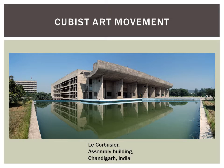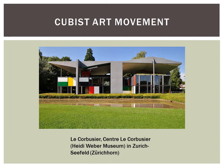Cubism is not only being represented on a canvas, but it is also being used in architecture. This assembly building in India shows how art and architecture can be used together. This building is another example of Cubist architecture. Without the Cubist movement, buildings like this may have never existed.